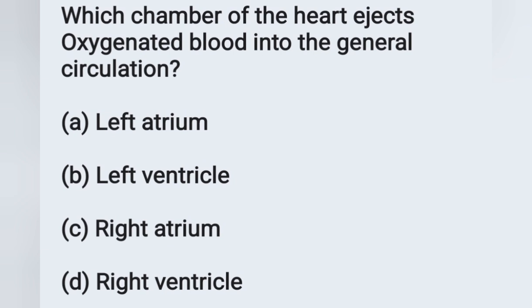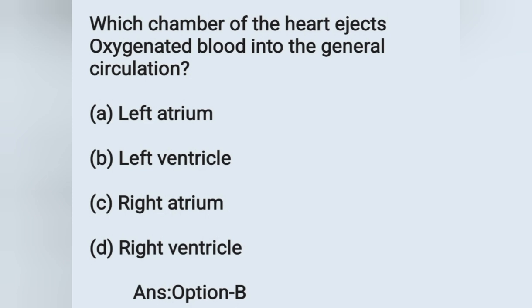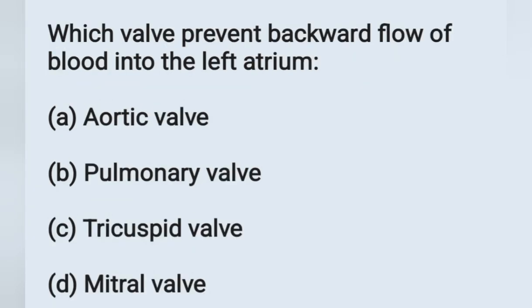Next question: which chamber of the heart ejects oxygenated blood into the general circulation? Options: (a) left atrium, (b) left ventricle, (c) right atrium, (d) right ventricle. Oxygenated blood first enters the left atrium, then goes to the left ventricle, and from the left ventricle through the aorta it goes to the general circulation. Correct answer is option B, left ventricle.